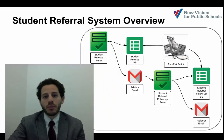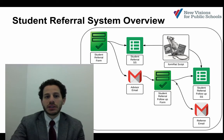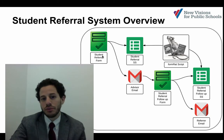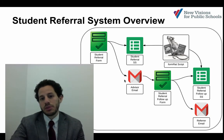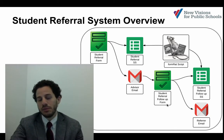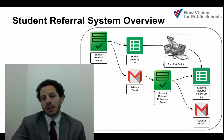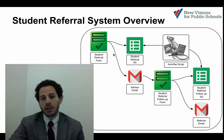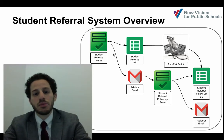Let's look at what a system might look like. In this case, we have a student referral system where referrals are inputted by teachers using a form. Those forms auto-generate emails which contain links to a second follow-up form. And when the follow-up form is completed, an email goes back to the original referrer saying that follow-up has taken place.